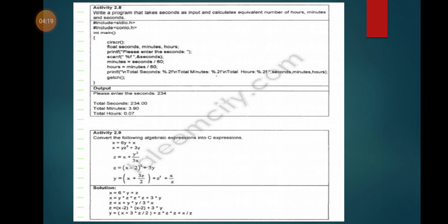Activity 2.9: Convert the following algebraic expressions into C expressions. We have to convert them in C language. Before I tell you, where two values are multiplied in C language, we have to use asterisk.